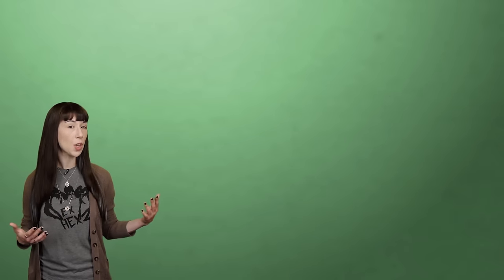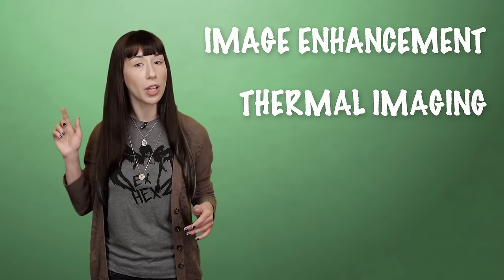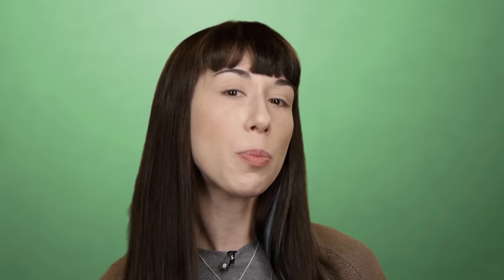And whether we're talking goggles, scopes, or cameras, most of these devices rely on one of two types of night vision. Image enhancement, that's the green looking one, and thermal imaging, which is the bluish gray stuff. They both produce results but work in different ways.